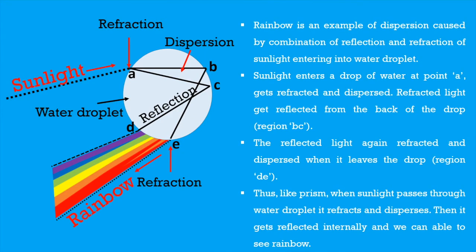Rainbow. Now let's try to understand this. Rainbow is an example of dispersion caused by combination of reflection and refraction of sunlight entering into water droplet.